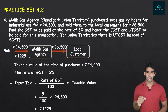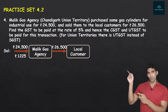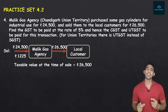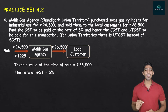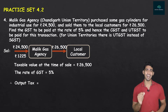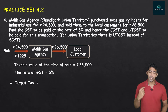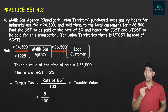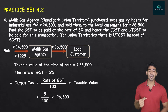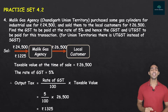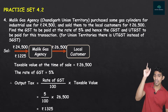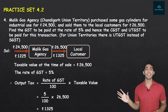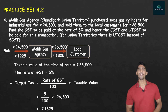Similarly, for the sale: output tax = (5/100) × 26,500 = Rs. 1,325. I have written 1,325 below 26,500. So for Malik Gas Agency, the input tax is Rs. 1,225 and the output tax is Rs. 1,325. GST Payable = output tax minus ITC = 1,325 minus 1,225 = Rs. 100. Malik Gas Agency has to pay only Rs. 100 as GST.